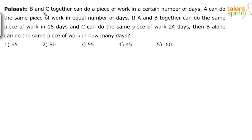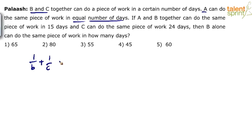Whatever time B and C together take, A can finish the work in that same time. So the capacity of B is 1/B, capacity of C is 1/C, and total capacity of B and C together is 1/B + 1/C, which equals 1/A. B and C together take some number of days, and A also finishes the work in the same number of days — meaning the capacity of B and C together is the same as the capacity of A.